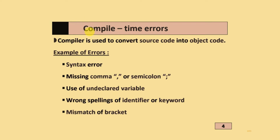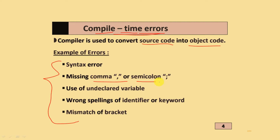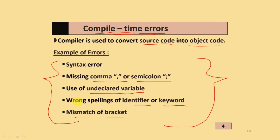Compile-time errors: the compiler is used to convert the source code into object code. Some examples of compile-time errors are: syntax errors, missing commas or semicolons, use of undeclared variables, wrong spellings of identifiers or keywords, and mismatch of brackets. These are the different examples of compile-time errors.